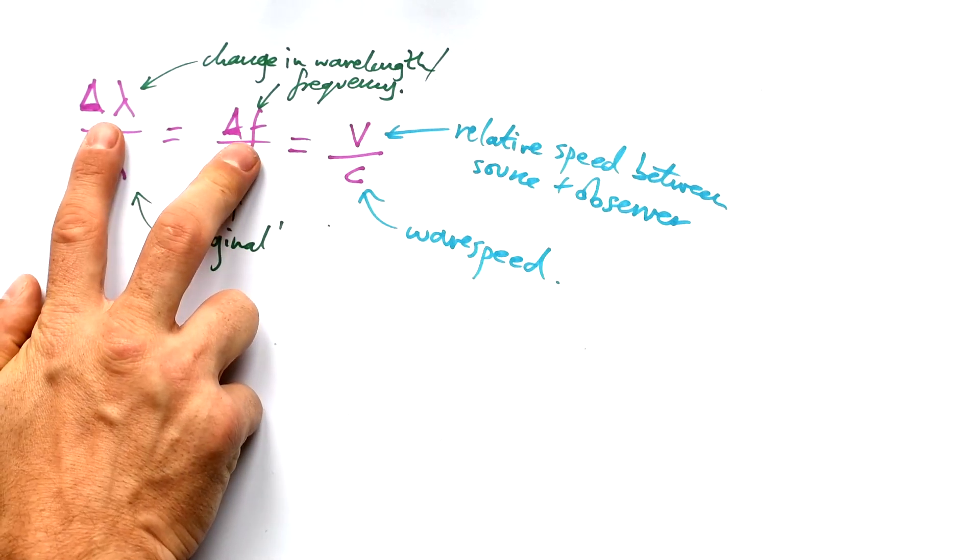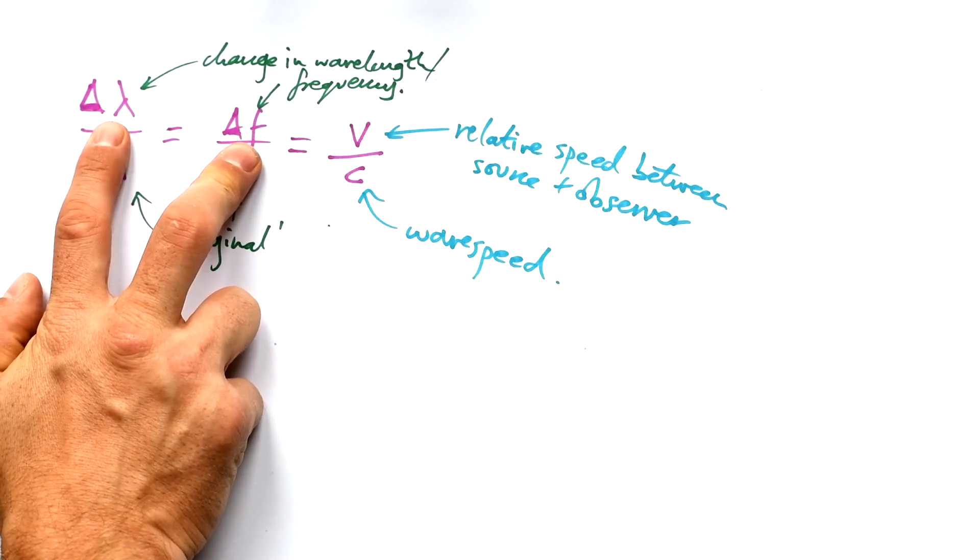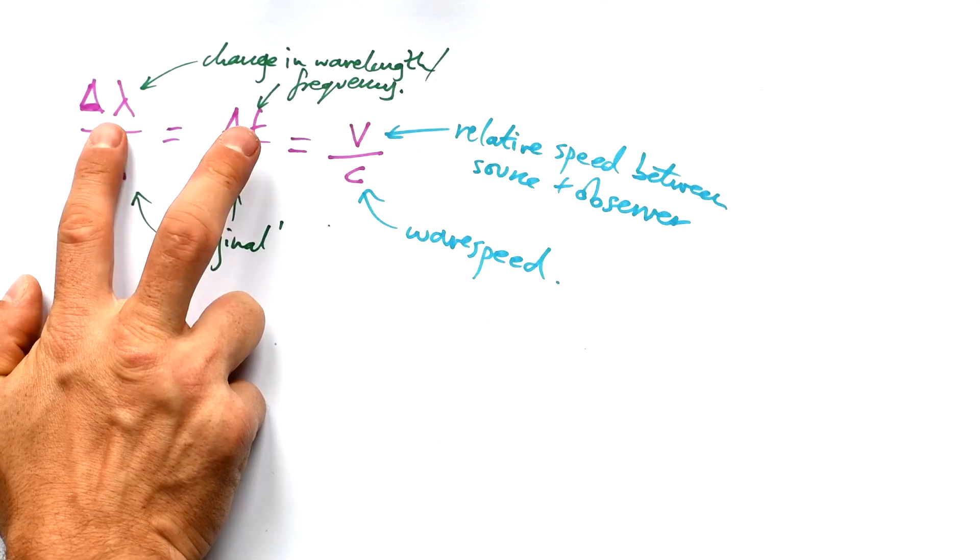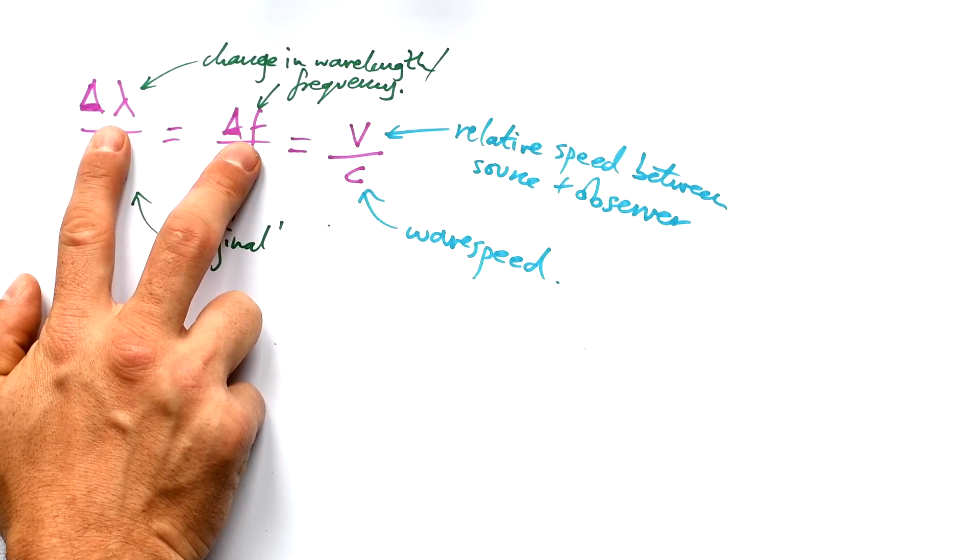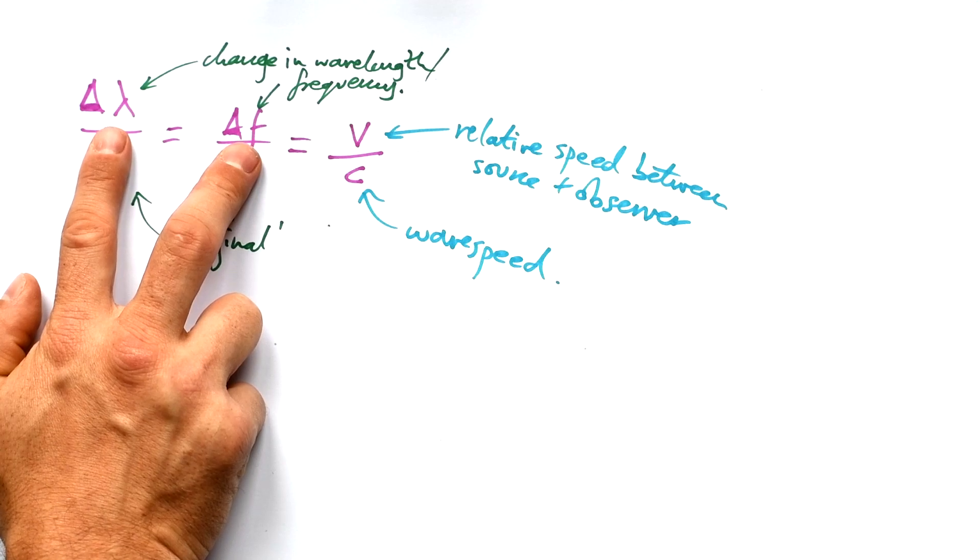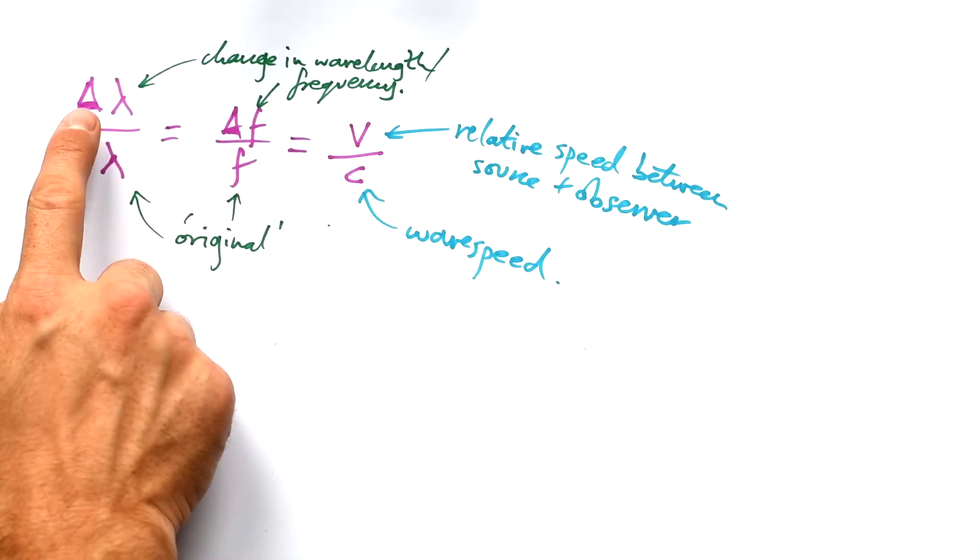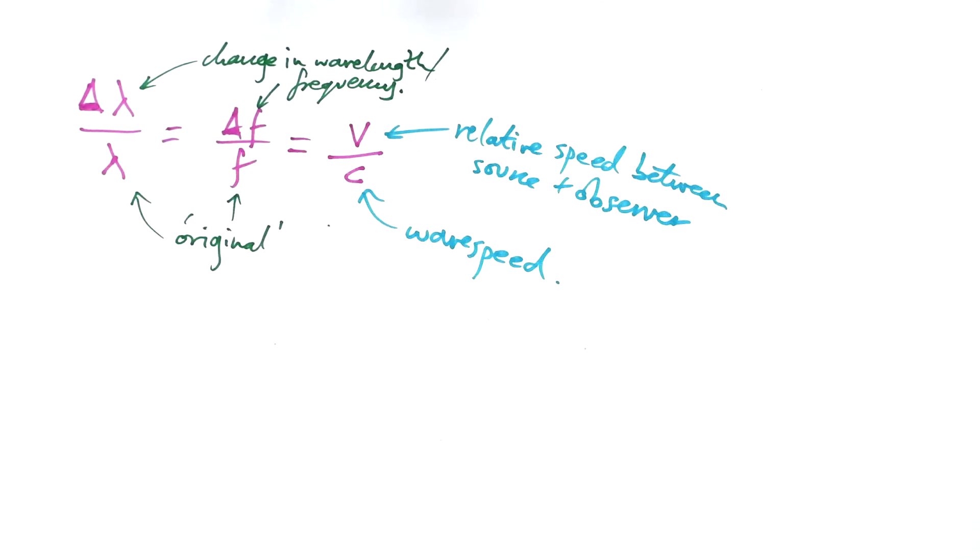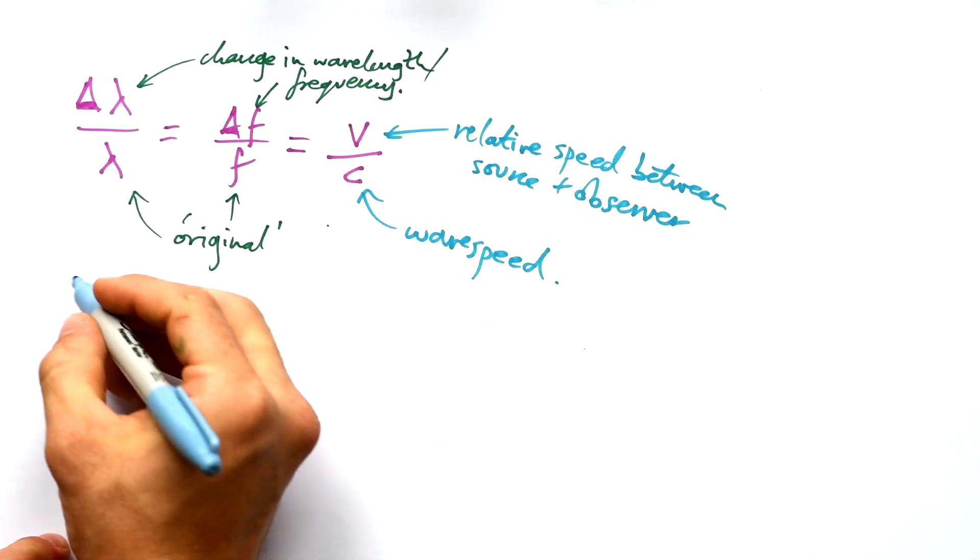Now you might be asking which one goes first? Do we do original take away new or new take away original to get this difference? Well, in reality, it doesn't matter because you're just going to get a minus if you do it the other way around. You're going to get the same number. So if you see a minus in front of these equations, that's implying that there is a certain way of doing it. But in reality, like I said, it doesn't matter, but you must make sure that you keep your head on straight as to whether the wavelength and the frequency are increasing or decreasing. Tell you what, let's have a look at an example.